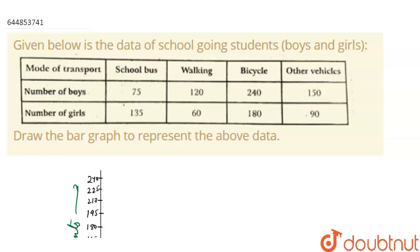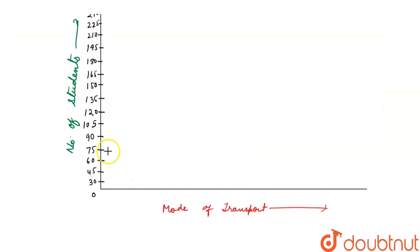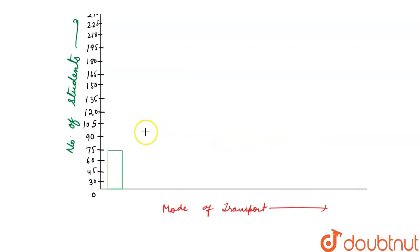First, for mode of transport school bus, number of boys is 75. So the green bar will be drawn at 75. And for number of girls it is 135, so the blue bar will go up to 135.